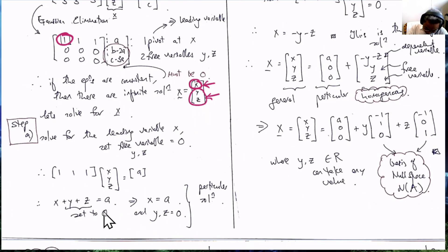Since Y and Z are free variables, we can set them to 0 and therefore we have X equals A as our solution, if the system of equations is consistent with Y and Z equals 0.